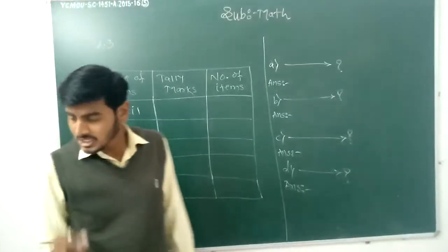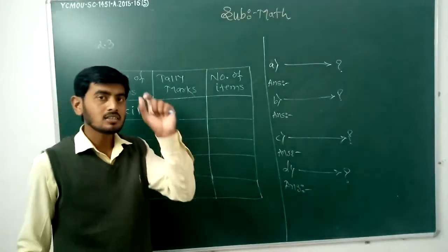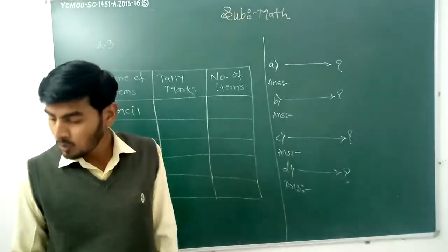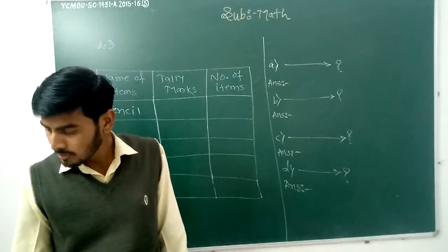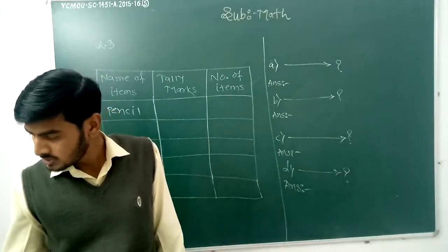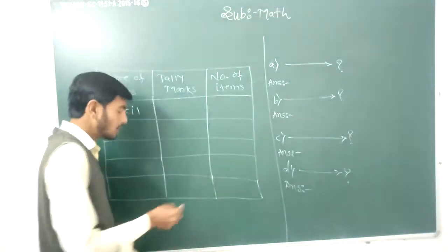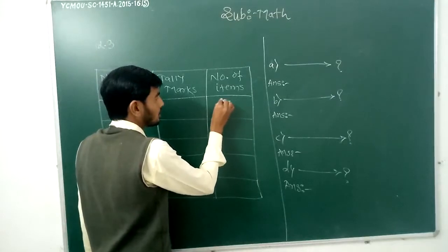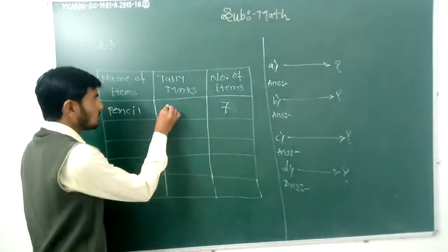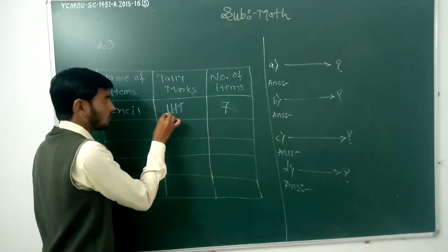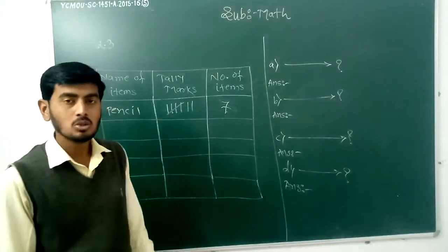Now the question is: how many pencils were sold from the stationery? Count how many pencils are available. First column: 1, 2. Second column: 3, 4. Then 5, 6, and in the last column, 7. So the total pencils sold in a day is 7. That is the tally mark for total stationery items sold.